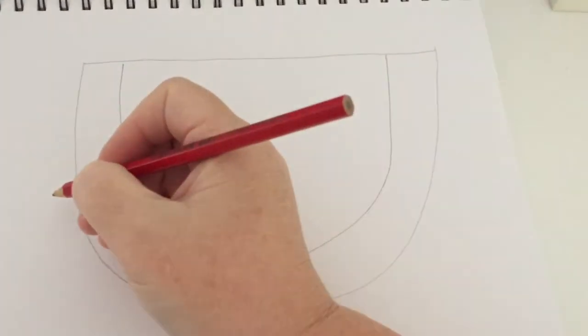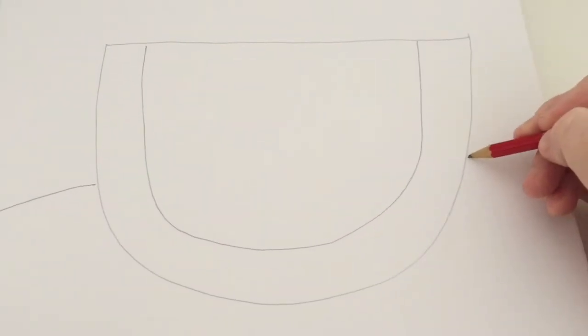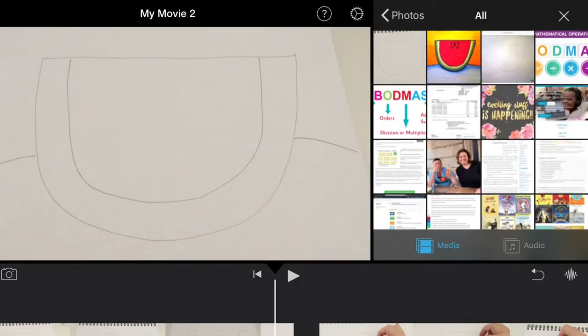Step 3 is nice and easy, just to create a base that our watermelon slice is sitting on. From either side of the edge of the watermelon, just draw out to the edge of the paper.